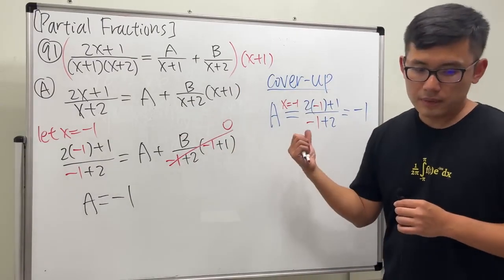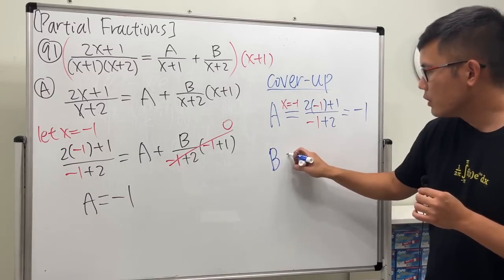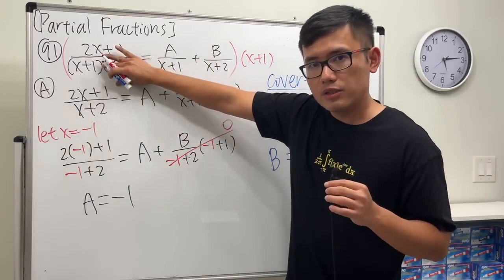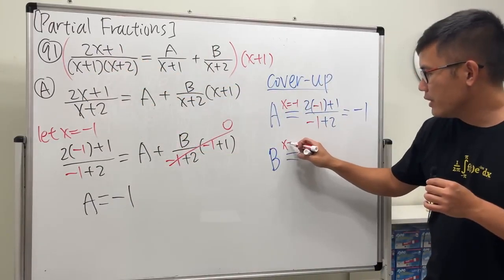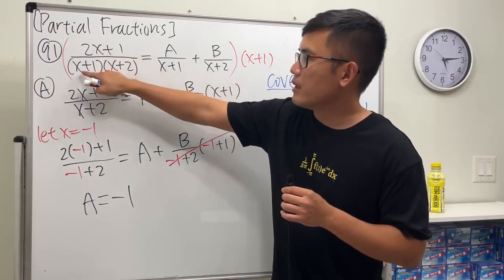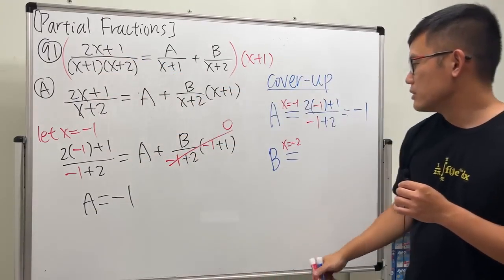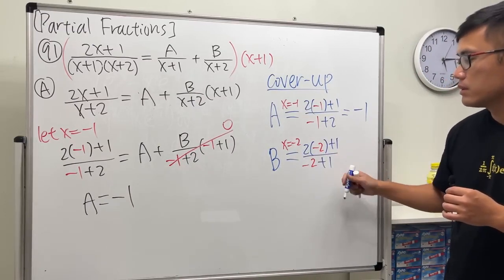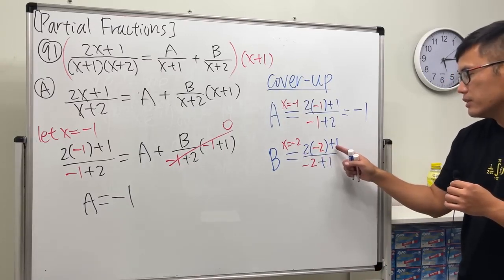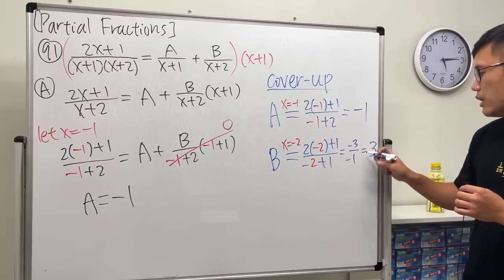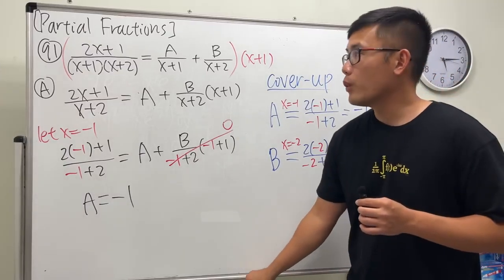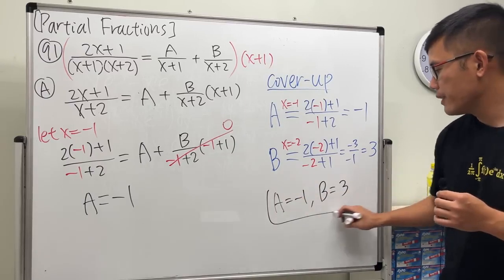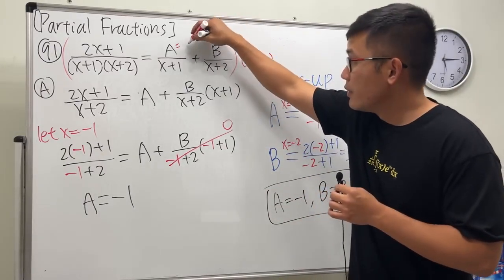Let's practice the cover-up for b. B has x plus 2 for the denominator, so we go back to the original and cover the same denominator. x plus 2 equals 0 means x has to be negative 2. So I'm going to put in negative 2 here and plug negative 2 into the remaining x's. We get 2 times negative 2 plus 1 over negative 2 plus 1. That's negative 4 plus 1, which is negative 3, over negative 1 — altogether we get positive 3. So a equals negative 1 and b equals 3.